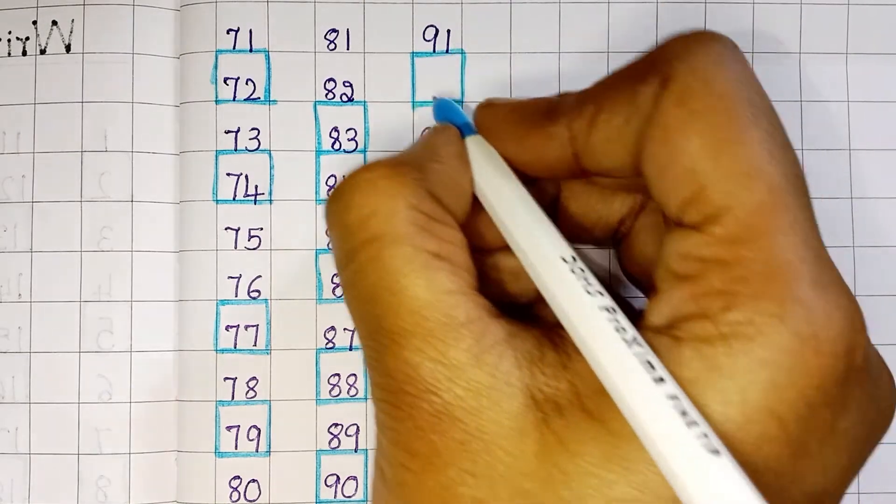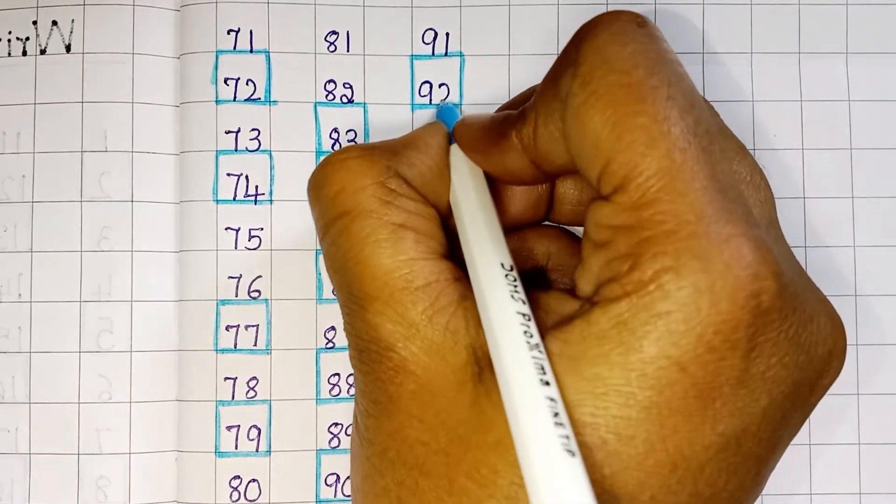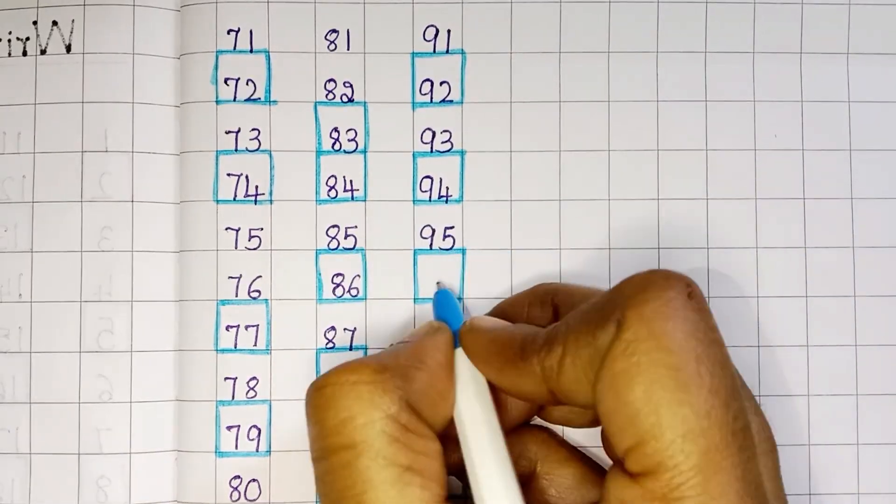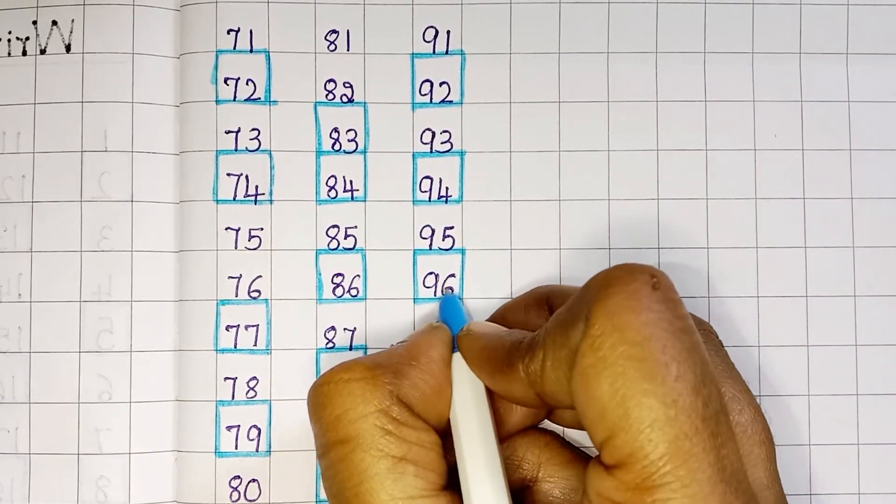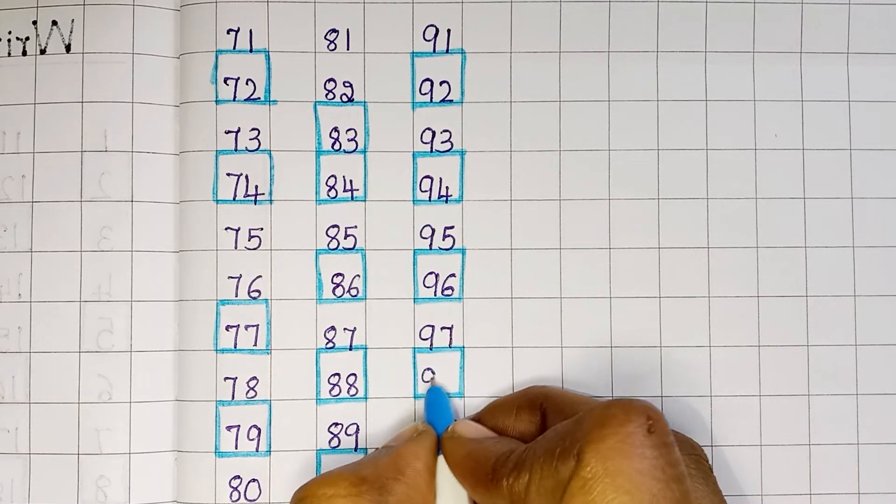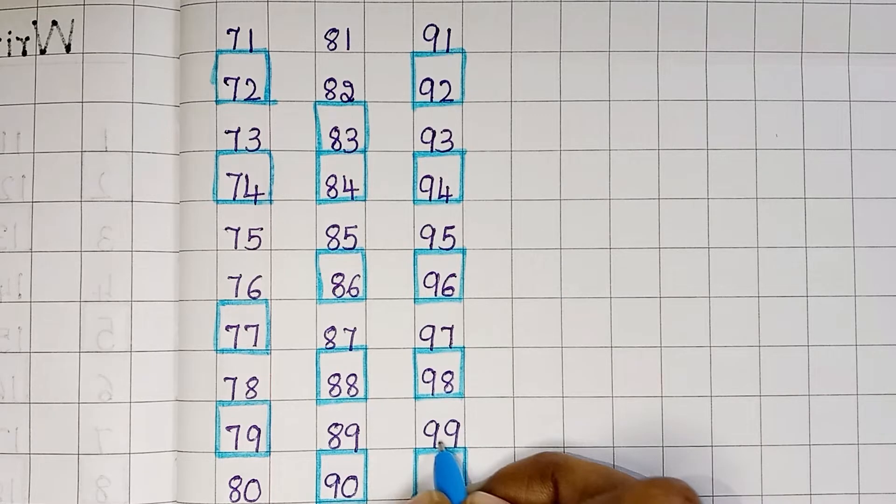91. 92. 93. 94. 95. 96. 97. 98. 99. 100.